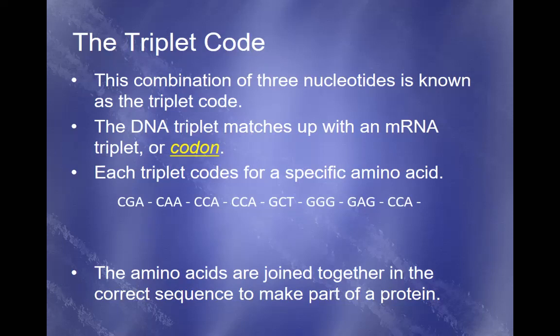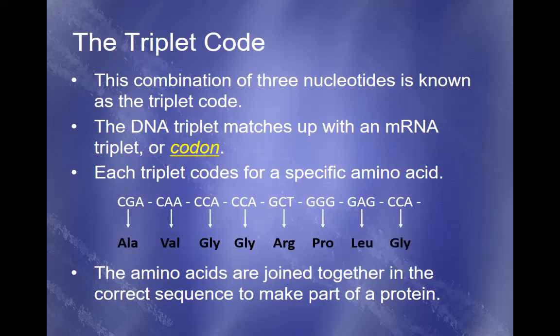We know this is a triplet and not a codon because it includes the base thymine — thymine is only found in DNA. In RNA, whether it's mRNA, tRNA, or rRNA, it will include uracil instead of thymine. Using the codon wheel, you convert the DNA by matching base pairs into RNA, and then the mRNA can be used to give you a particular amino acid. In this instance, the amino acids are alanine, valine, glycine, glycine, arginine, proline, leucine, and glycine — joined together in a correct sequence based on the DNA bases to make that section of the protein.